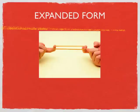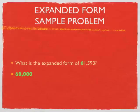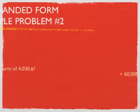Expanded form — remember, that's where we stretch out the number. What is the expanded form for 61,593? We've got 60,000 in the ten-thousands spot, so we write 60,000. Plus 1,000 in the thousands spot. Plus 500 — the 5 is in the hundreds spot. Then we've got a 9 in the tens spot, which is worth 90. And finally, there's a 3 that's just in the ones spot, so just 3. Result: 60,000 + 1,000 + 500 + 90 + 3.